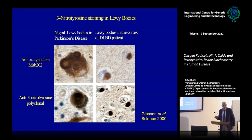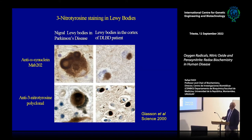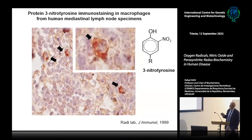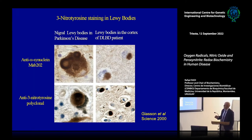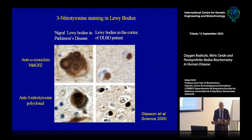A little later, investigators working on human neurodegenerative diseases — both Parkinson's and dementia — found similar evidence using an anti-nitrotyrosine antibody in Lewy bodies, one year after we published with macrophages in lymph nodes being immunostained. They found that Lewy bodies in Parkinson's and dementia patients were also highly stained for nitrotyrosine, again suggesting a shift from NO going from cytoregulatory to pathogenic.